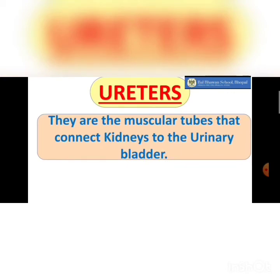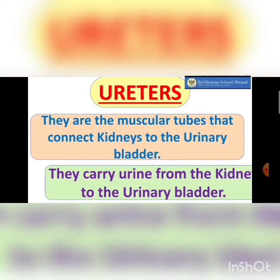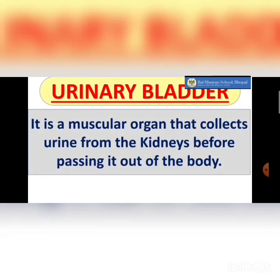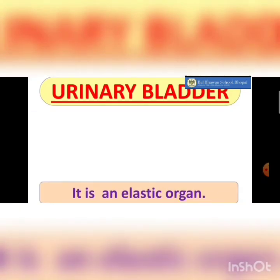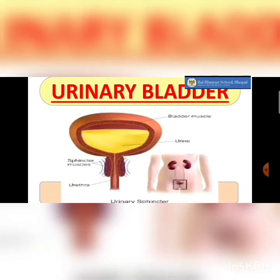The ureters are muscular tubes that connect the kidneys to the urinary bladder and carry urine from the kidneys to the urinary bladder. The urinary bladder is a muscular, elastic organ that collects urine from the kidneys before it passes out of the body. Urine is stored in the bladder and is removed from the body with the help of the urethra, which is the last organ of the urinary system.